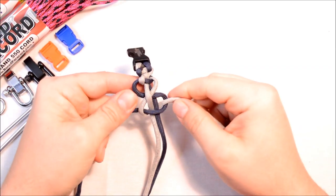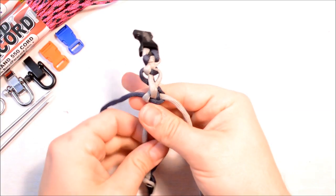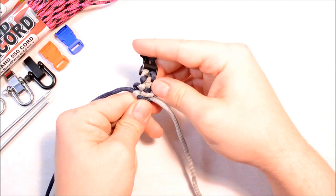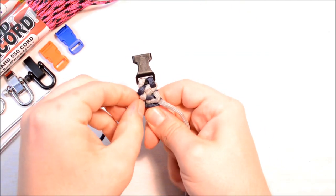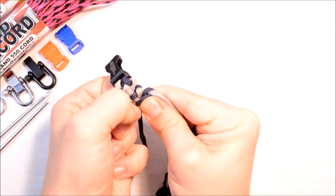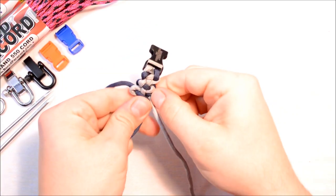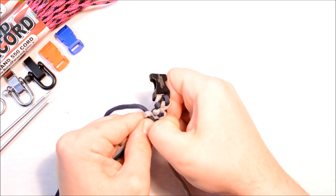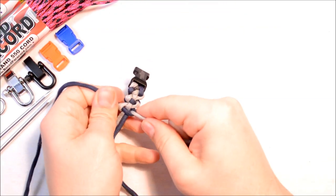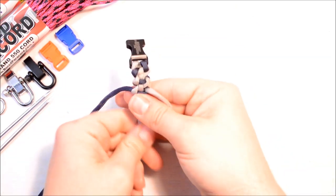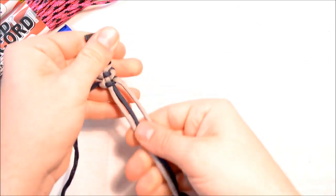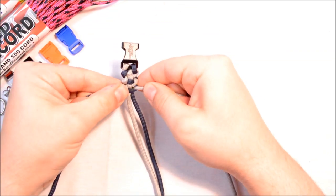So now we do our Solomon: cross over, take it behind, come up through the bottom. Okay, cinch everything up. Now we got to pull everything tight, so grab the silver, pull that silver tight, and we're gonna pull our navy tight. And then you can pull your working ends tight and make sure you're pulling these pretty tight so you get a nice even look as you work your way down.